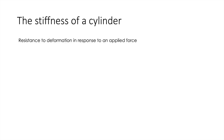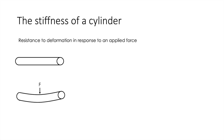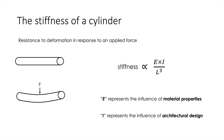For example, let's talk about stiffness. We can define stiffness as the resistance to deformation in response to an applied force. So if we have a cylinder and we apply a force to it, the cylinder will lose its shape, at least temporarily, depending on how stiff it is. Stiffness is proportional to an expression where L is the length of the cylinder, E represents the influence of material properties, and I represents the influence of architectural design — the two kinds of traits we are interested in.